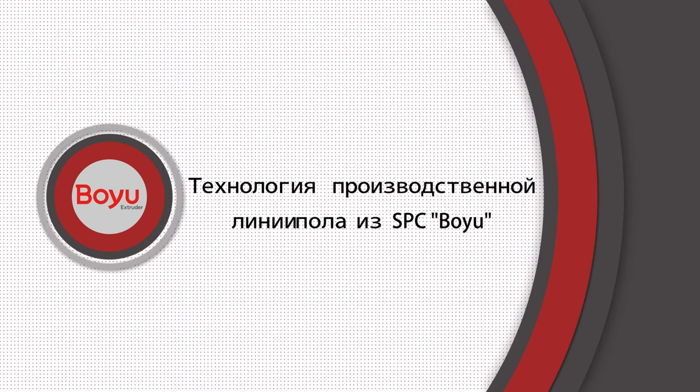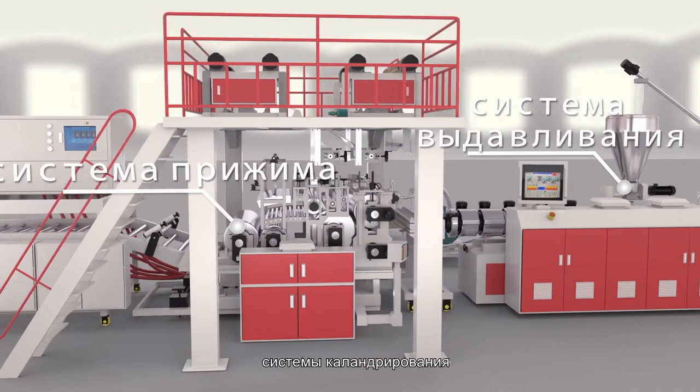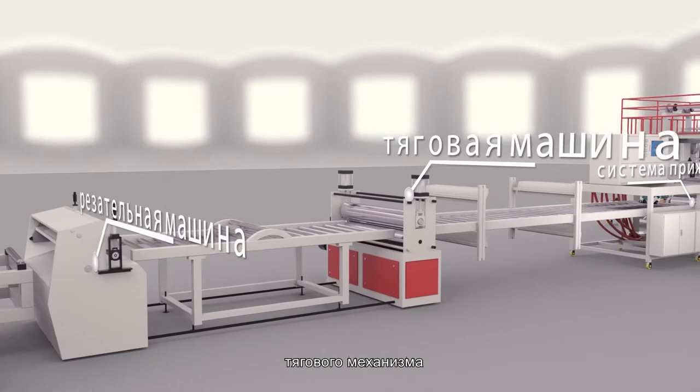Process Technology of STC Floor Production. The STC Floor Production Line consists of six parts: Mixing System, Extrusion System, Calendering System, Tractor, Shearing Machine, and Automatic Plating Machine.